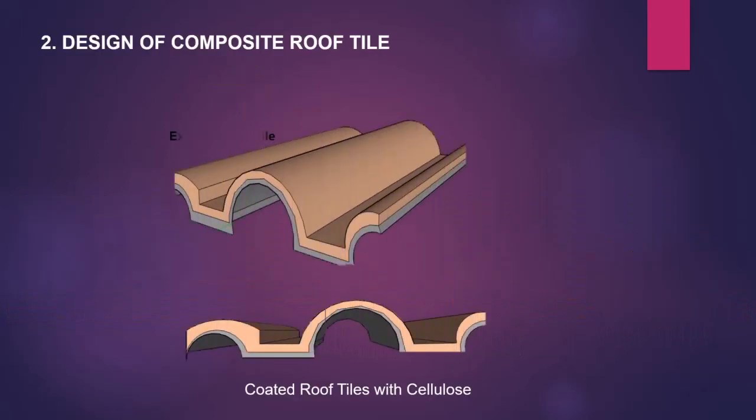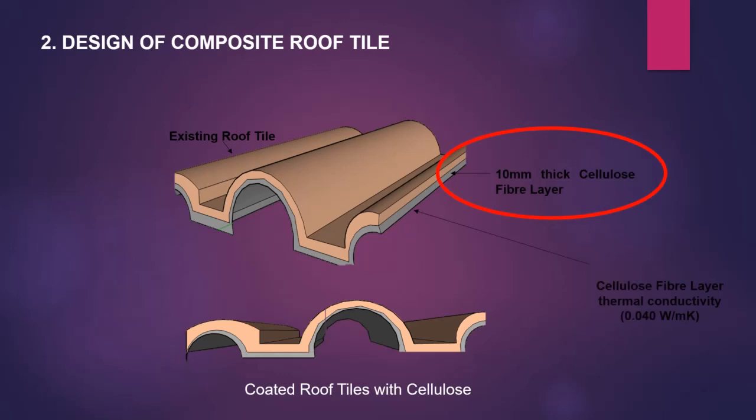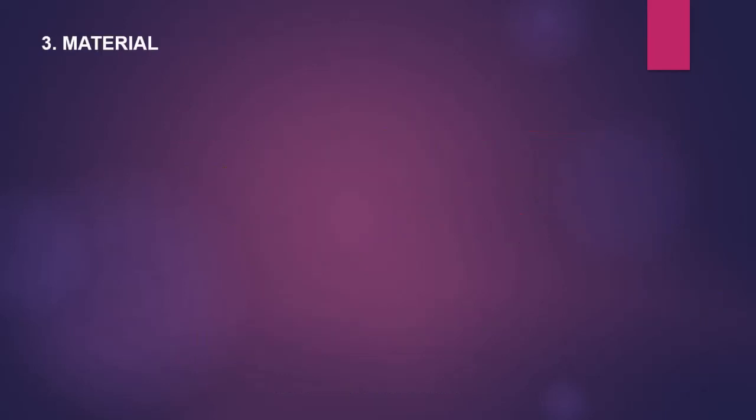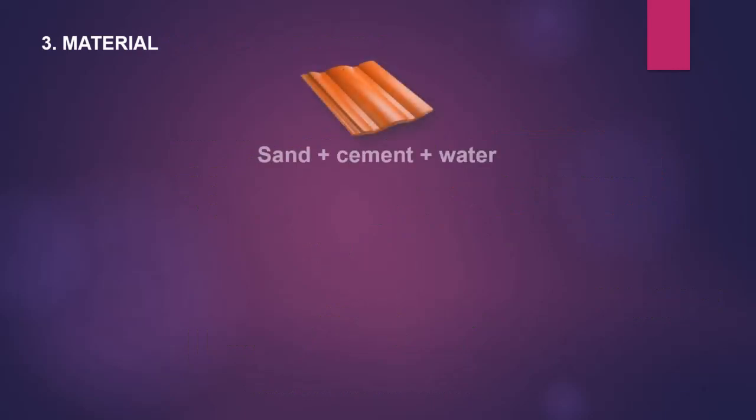This innovation is to modify the existing roof tile by including one layer of insulation material, which is cellulose fiber about 10 millimeters thick. The cellulose fiber is an eco-friendly insulation from recycled paper fibers. The typical thermal conductivity k-value of cellulose fiber insulation is around 0.04 watts per meter kelvin.